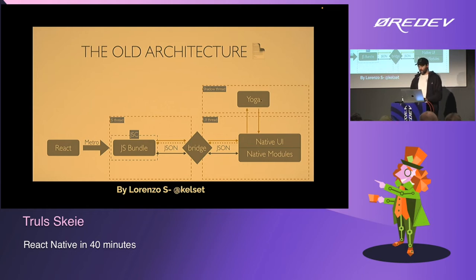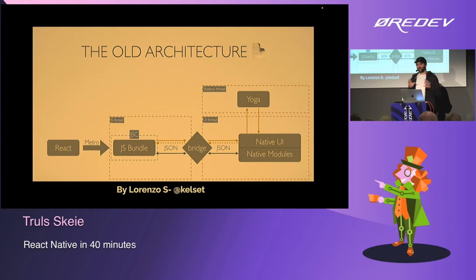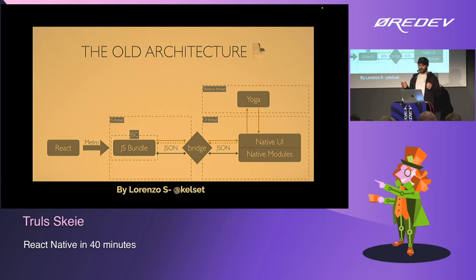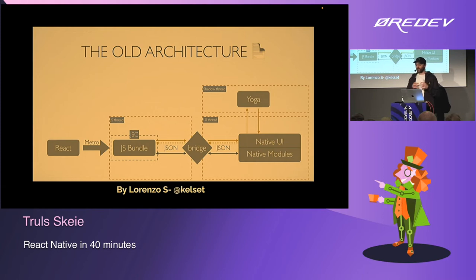Also, Yoga — the UI engine — is written separately for each platform. Even though it has the same specs, it works differently on each platform. Optimizations done on Android aren't shared with iOS and vice versa, because it's been implemented independently on each platform.